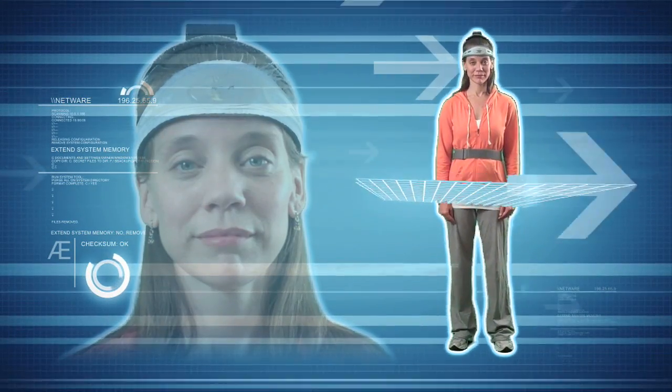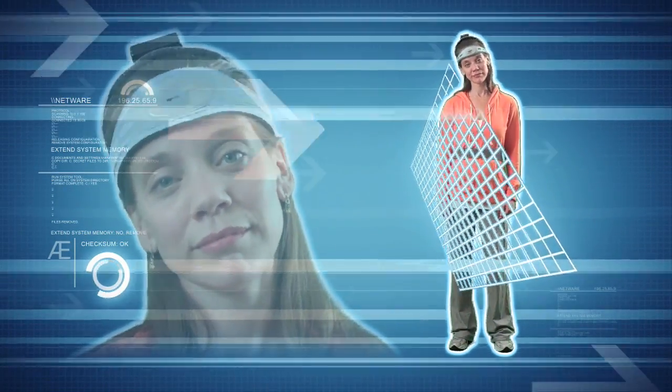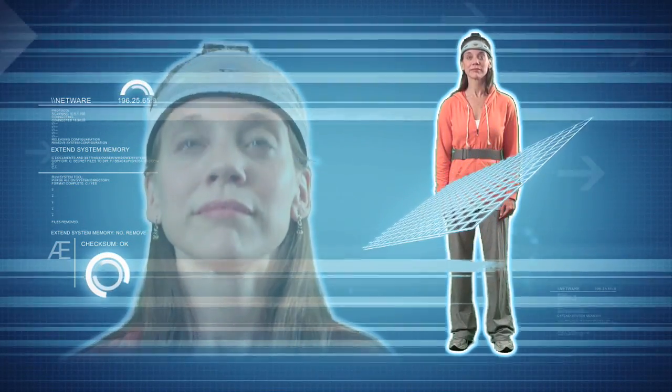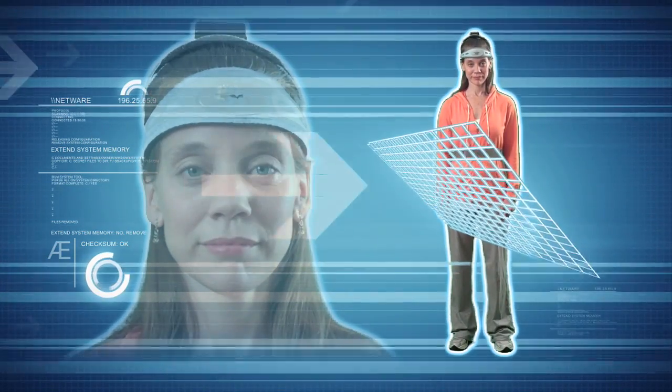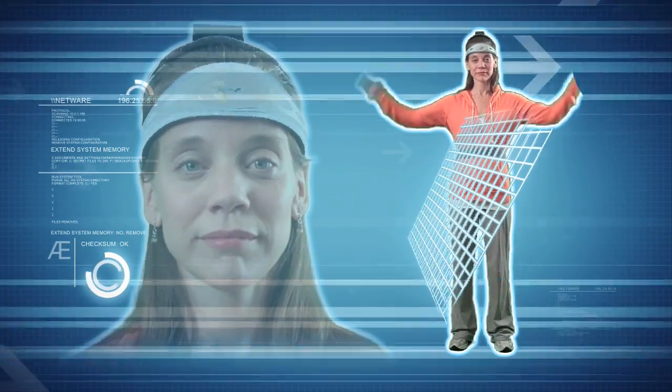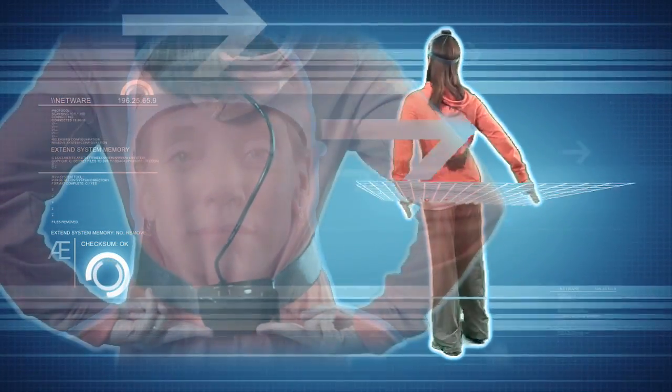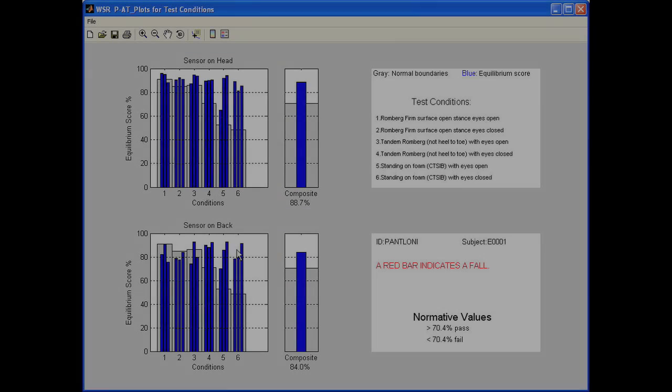MotionTrack records four channels of postural sway data simultaneously. Roll, or side-to-side motions, and pitch, anterior-posterior movements, are collected from two lightweight sensor packets worn on the patient's head and back. Both sites function independently to record position and velocity of postural sway.